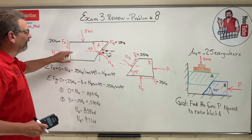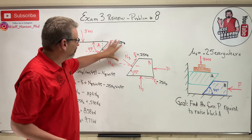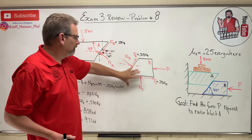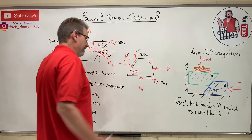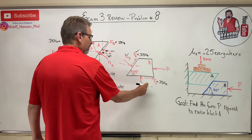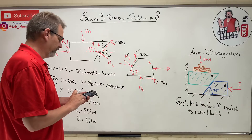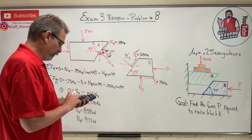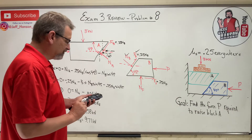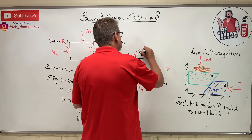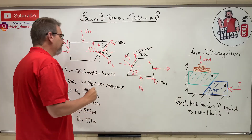I don't really need N_A - what I need is N_B, because I transfer that information to the other free body to get P using two more equations. Now I know N_B. Computing 0.25 times N_B = 0.25 times 9.71 gives 2.43 kilonewtons for the friction force. And N_B = 9.71 kilonewtons.